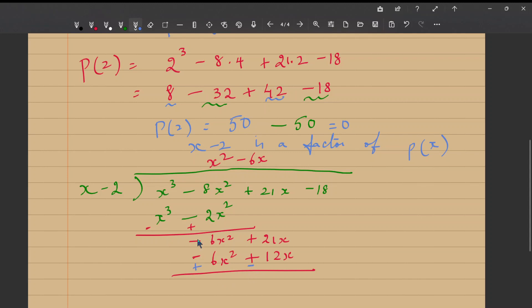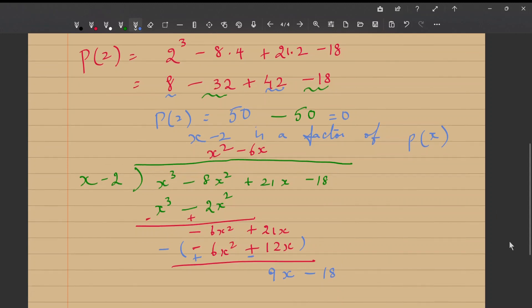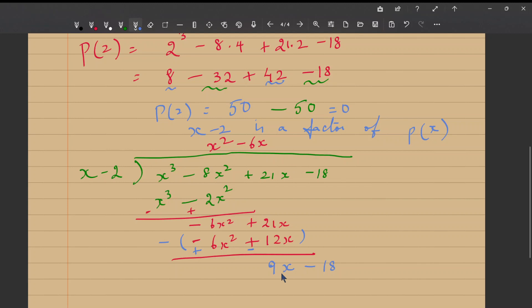Why do we get this? Because you are going to subtract the whole term. So your minus into minus becomes plus and minus into plus becomes minus. So your answer would be 21 - 12. What is 21 - 12? 9x. And plus 9x - 18. Bringing the 18 down, you get -18.